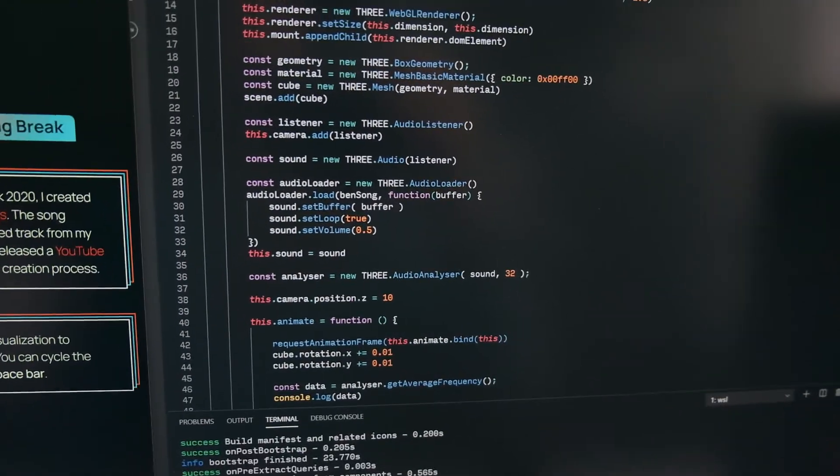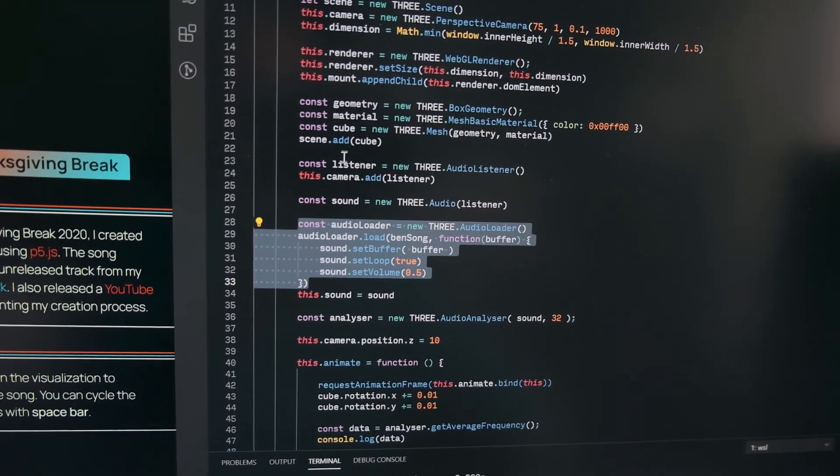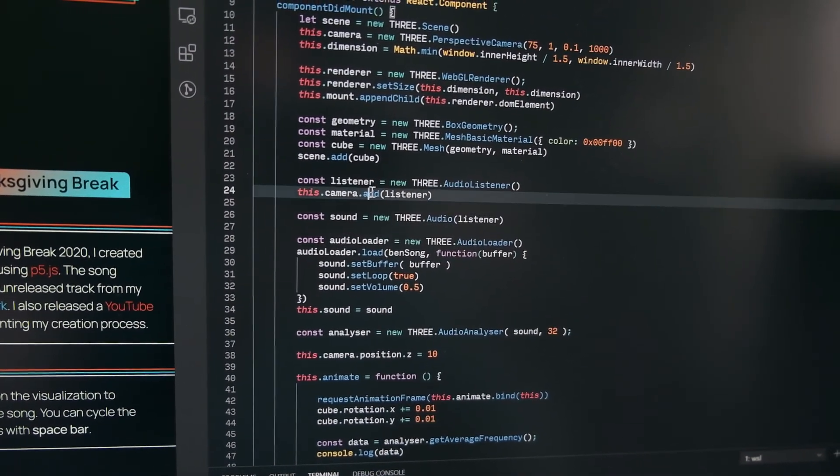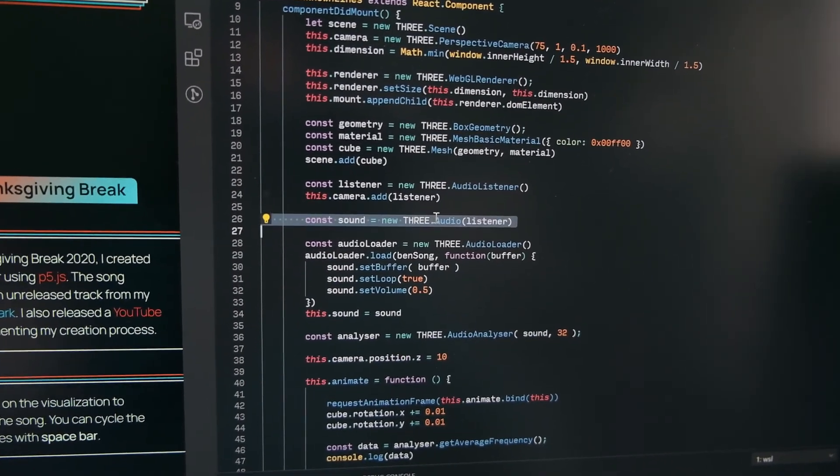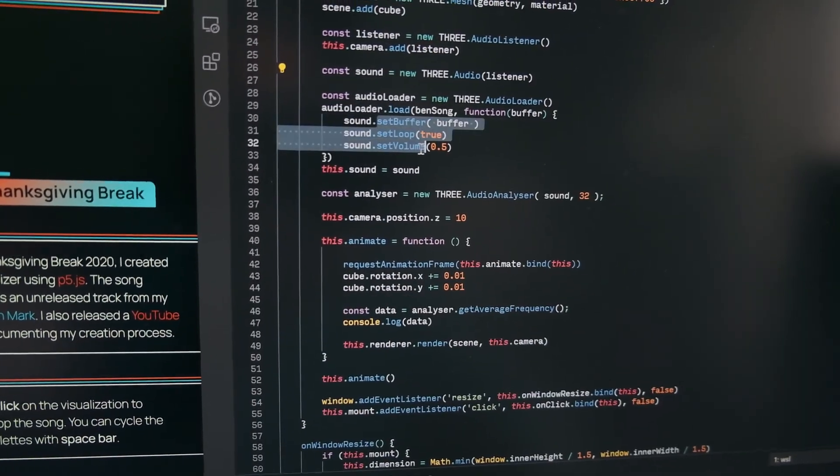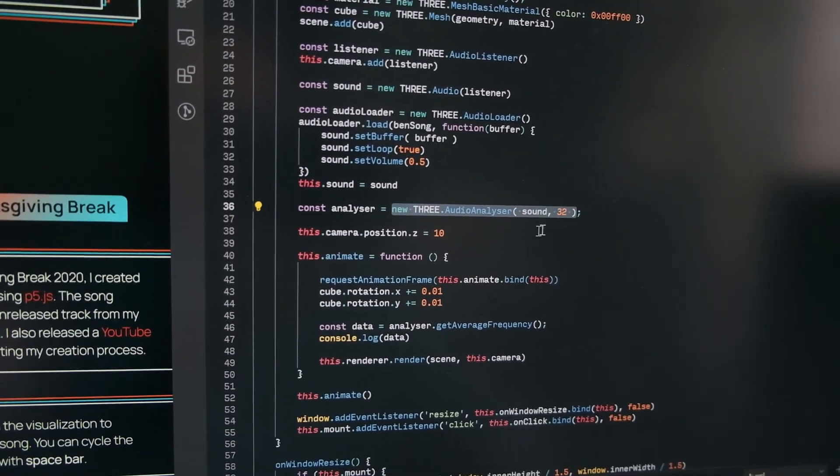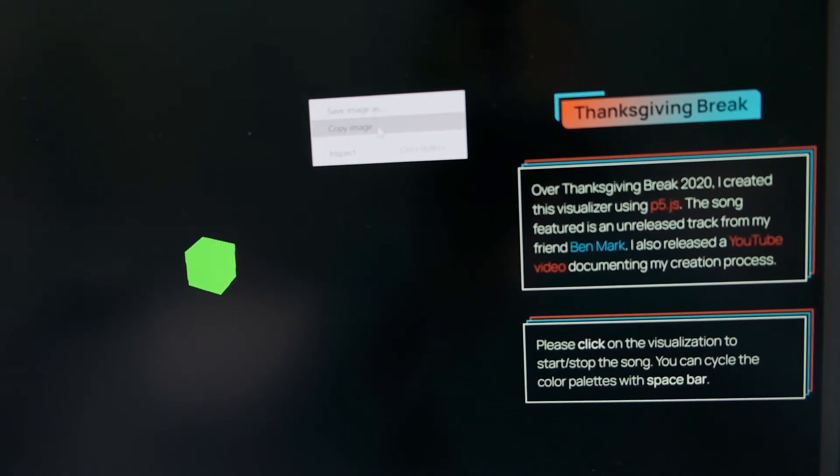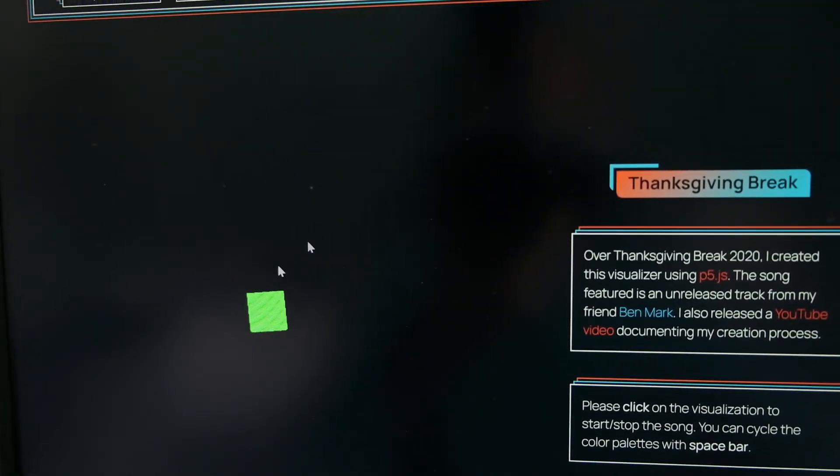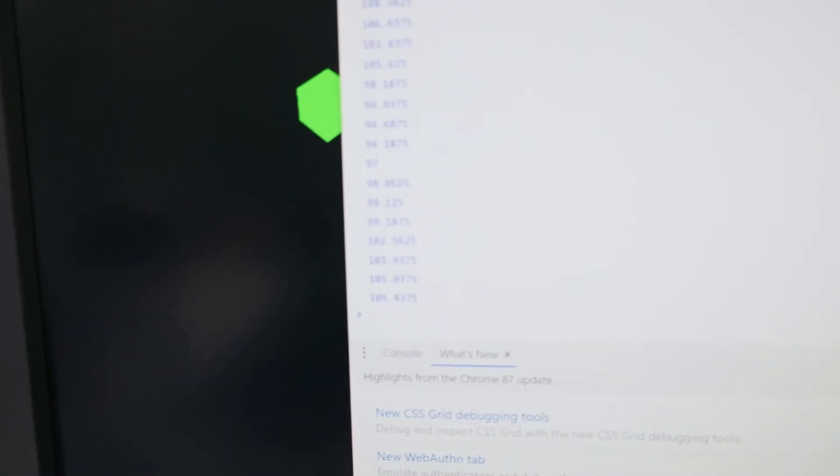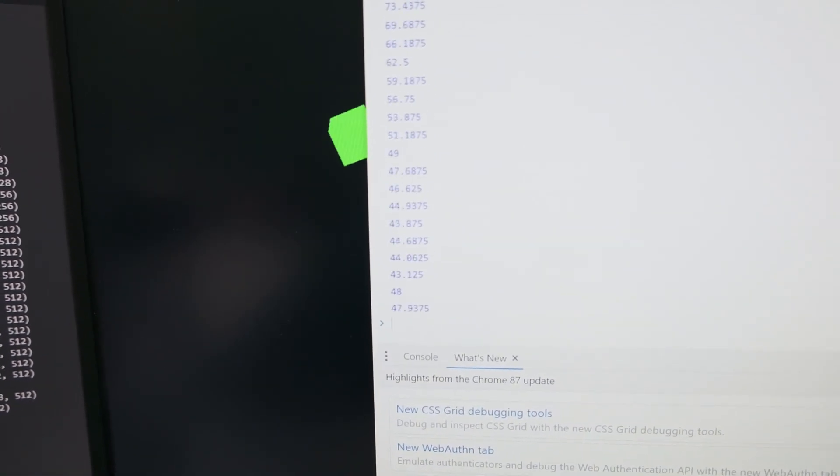Pretty much how we're doing it is this audio loader, this listener, and adding the listener to the camera, and then it's 3D audio sound. It's pretty much just taking the song, do it, and I'm also doing an audio analyzer. So if I inspect the page, start the song again, you can see it printing. I think it's like the most prevalent frequency right now. It's probably like the pitch. But yeah, so now on to the next stage, actually making the lines with the Fourier transform.